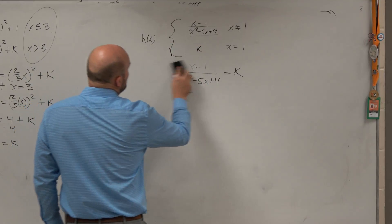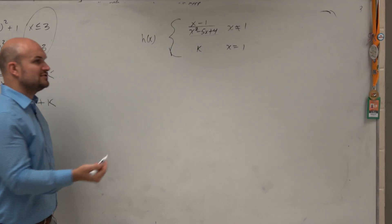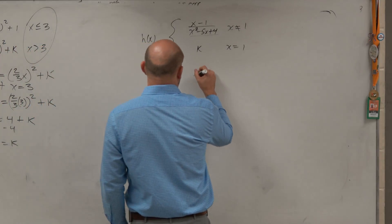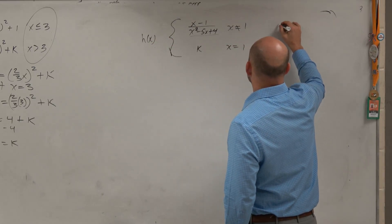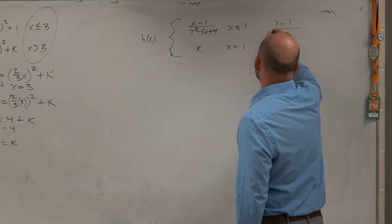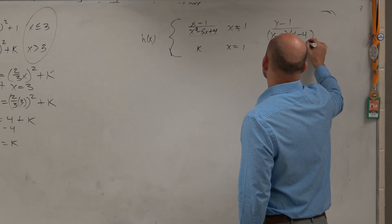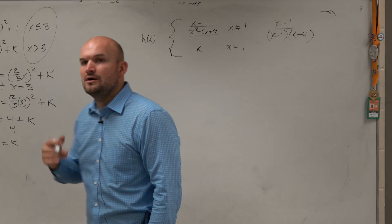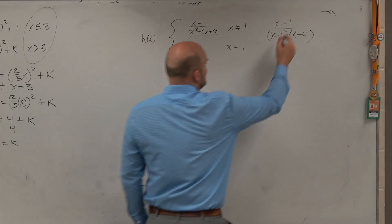But if I recognize, oh, I have a quadratic. Let me try to factor that real quick. If I maybe try to factor that, that becomes x minus 1 over what two numbers multiply to give me 4? Add to give me negative 5. x minus 1 times x minus 4. Oh, and then I could divide this out.